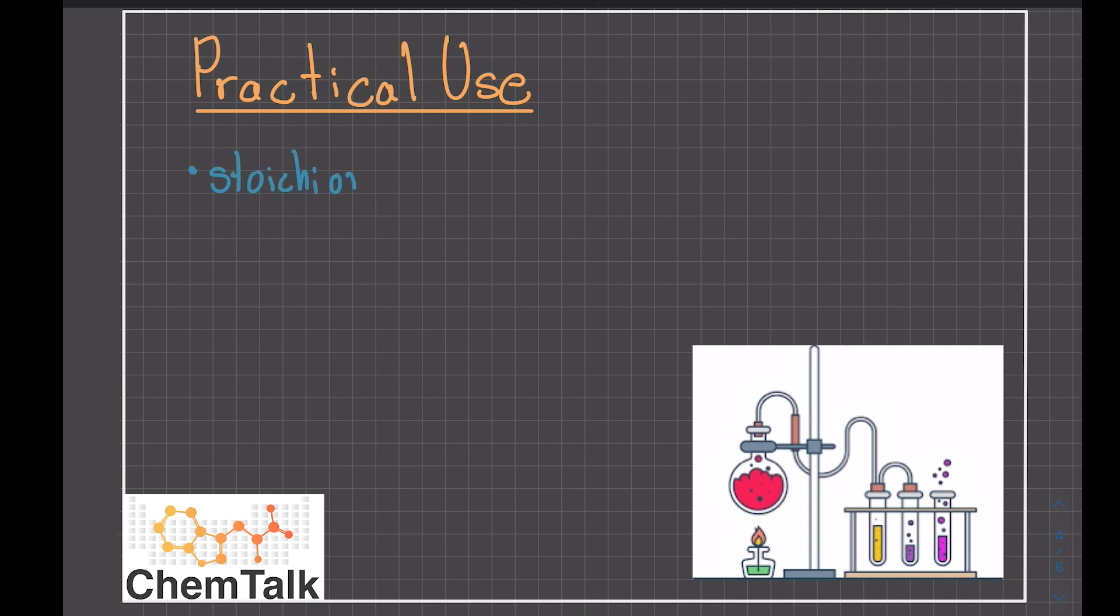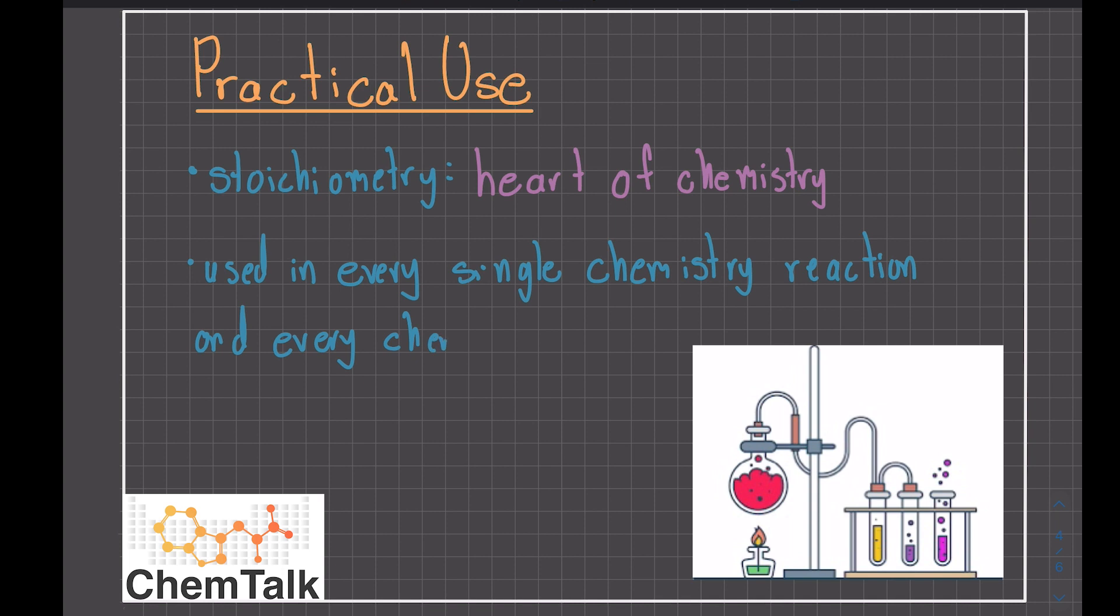Stoichiometry is the heart of chemistry. In a chemistry laboratory, different formulas or reactions require certain measurements or dilutions that aren't always obvious. Stoichiometry is a skill that is practiced and used in every single chemistry reaction in every chemistry lab. It is an important skill to learn to become proficient in chemistry.